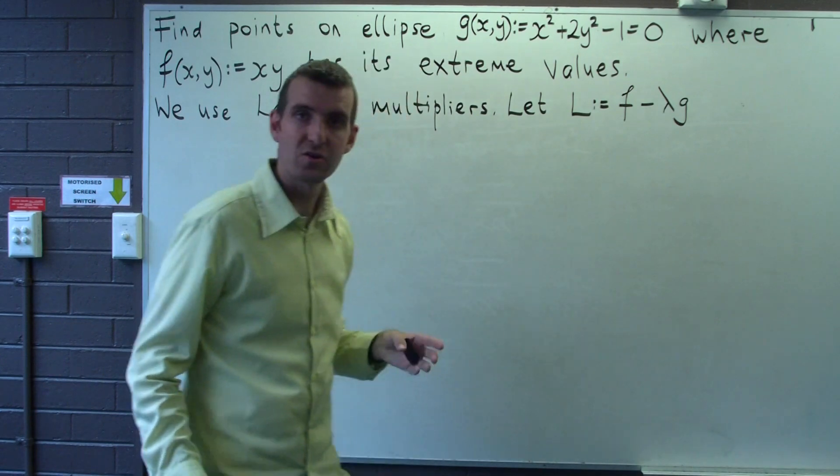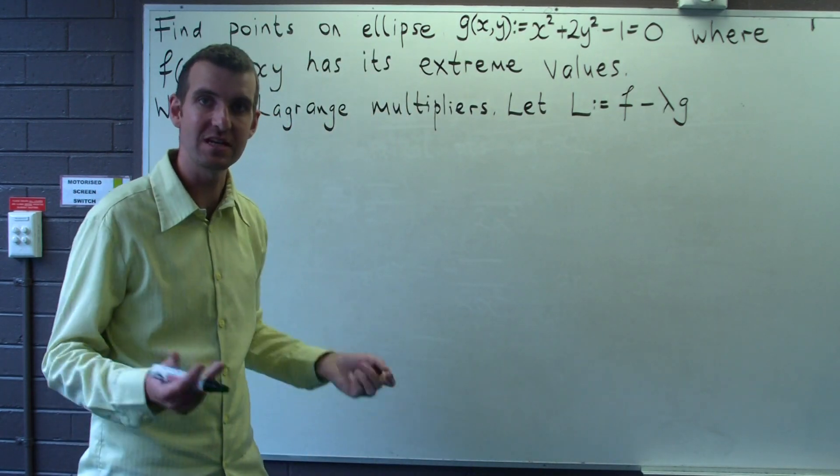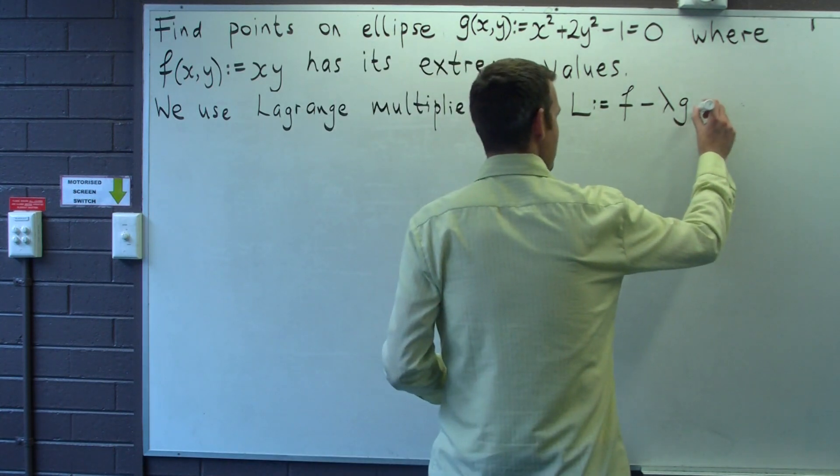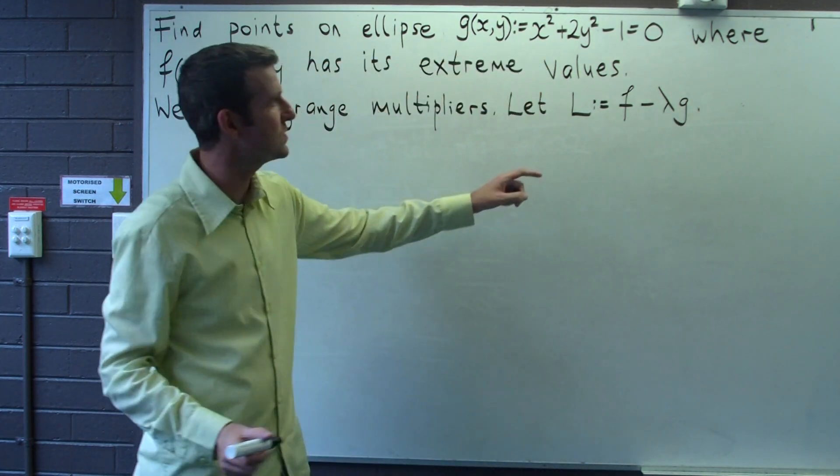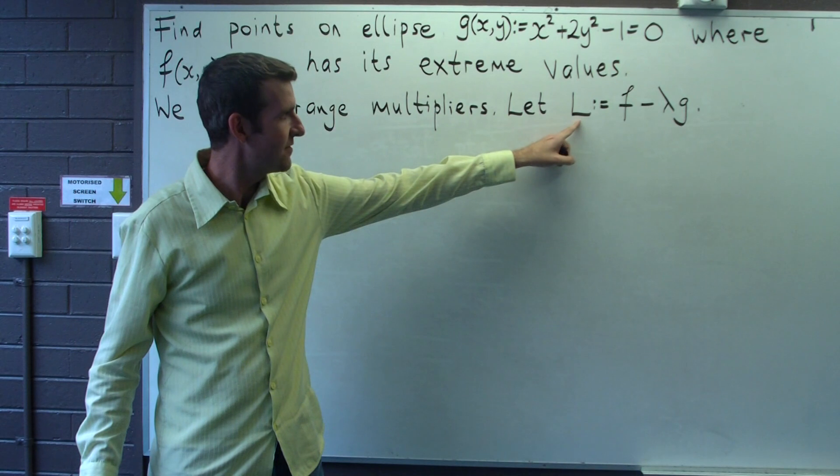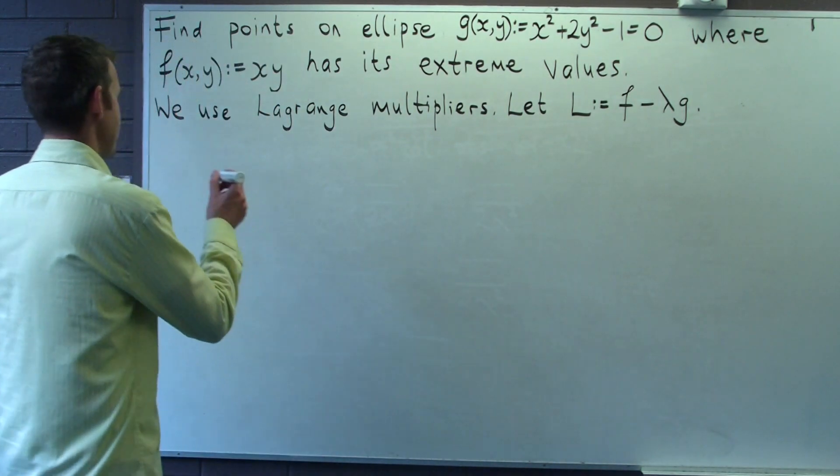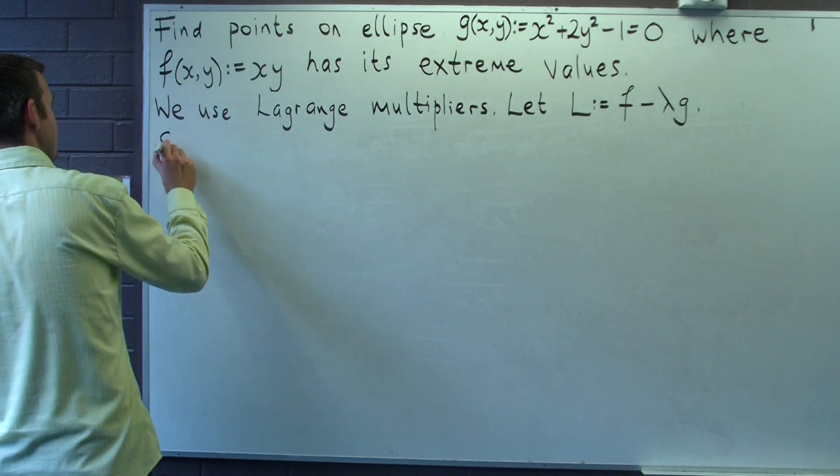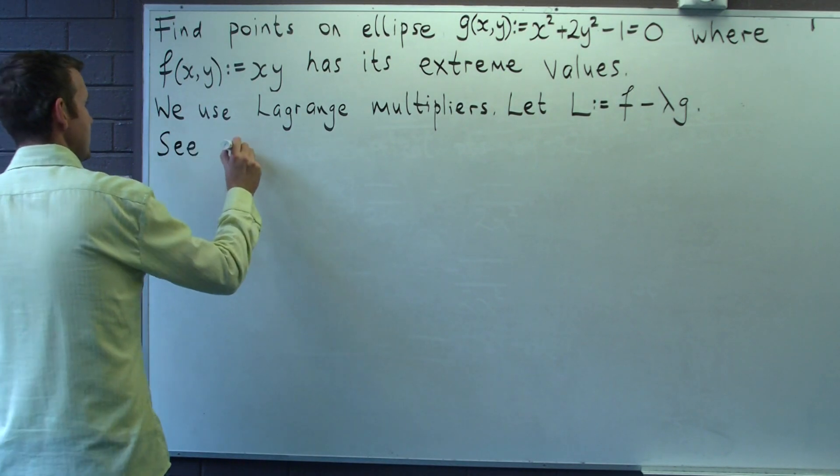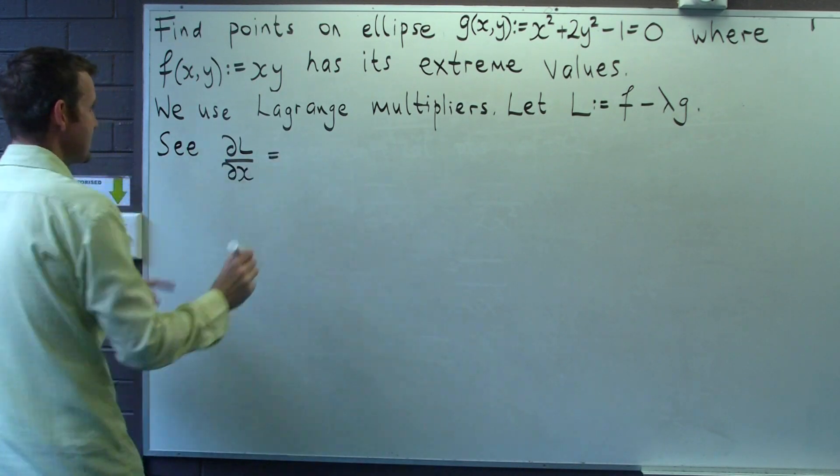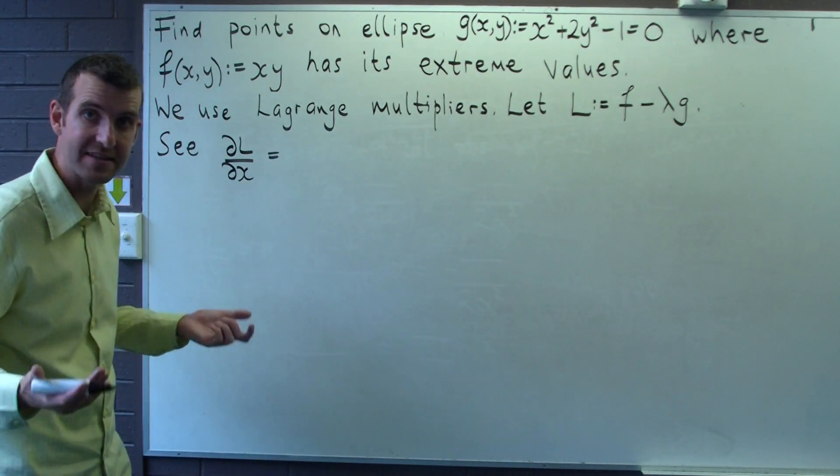Now that might sound like a lot of stuff going on there, but essentially what we do is we find the critical points of L. That's all we're doing. So to find the critical points, we calculate dL/dx and dL/dy and set them to zero.